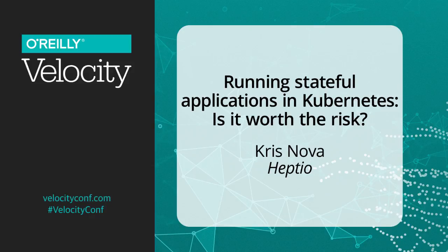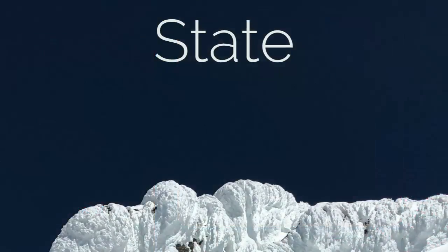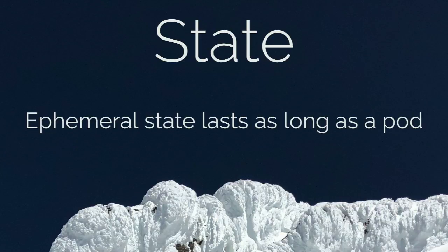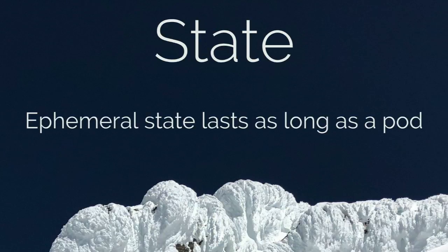Let's talk about state in Kubernetes. There are two types of state. The first one is ephemeral — it goes away. That's the stateless component. I start a container, your application, I run it, and state goes away when that application is done and exits. This is simple and easy, and it gives us powerful guarantees as systems engineers that we can destroy our application at any time.